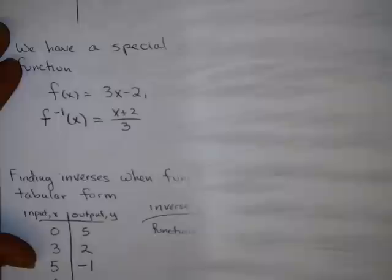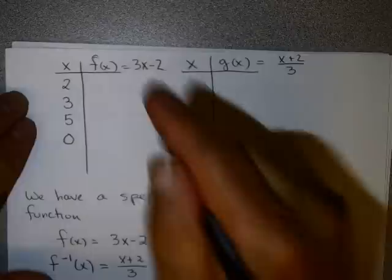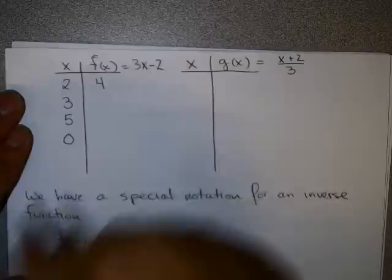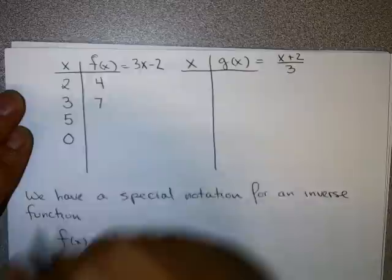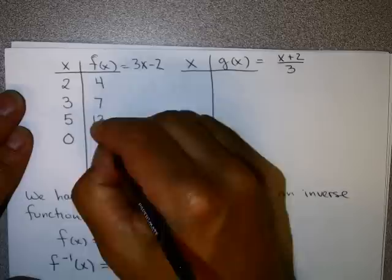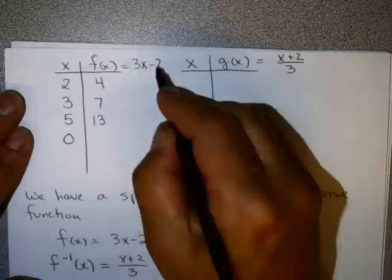Let's take a bunch of values and see how this works. I start with my original function, 3x minus 2. If I put in the value 2, we know that we get the value 4. If I put in the value 3 as my input, I get 3 times 3, which is 9, minus 2, which is 7. Put in the value 5, that's 3 times 5 is 15, minus 2 is 13. If I put in the value 0, I'll get 3 times 0 equals 0, minus 2 gives me minus 2.